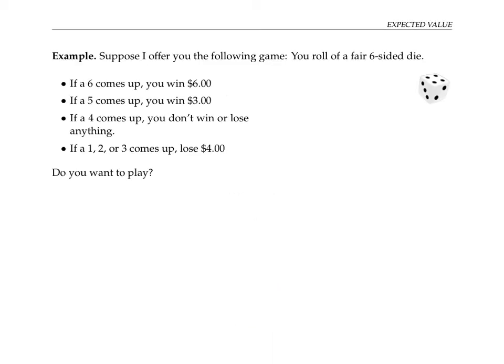Suppose I offer you the following game: you get to roll a fair six-sided die. If a six comes up, you win $6. If a five comes up, you win $3. If a four comes up, you don't win or lose anything. And if a one, two or three comes up, you lose $4.